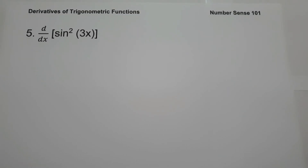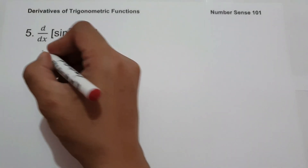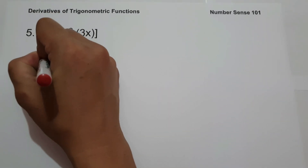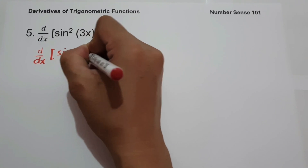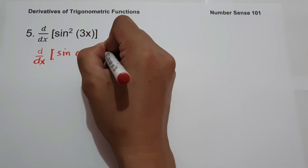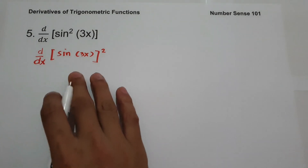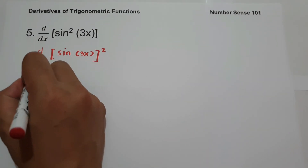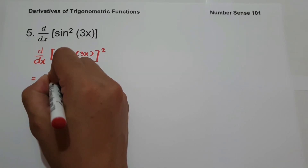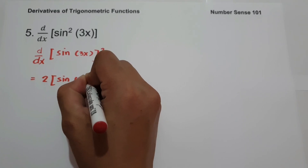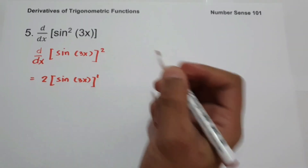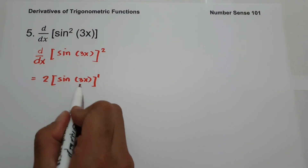On number 5, what is the derivative of sin²(3x)? To find the derivative of sin²(3x), let us rewrite this as the derivative of [sin(3x)]². As you can see, we have a chain rule. To apply it, we bring down the exponent: 2 multiplied by sin(3x) raised to 1, times the derivative of sin(3x).